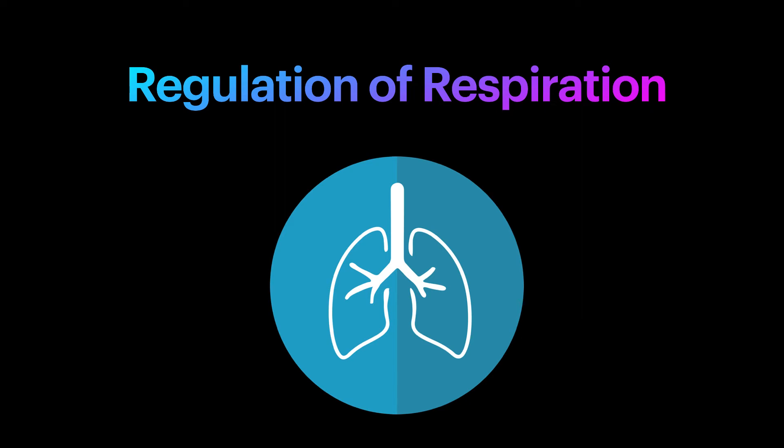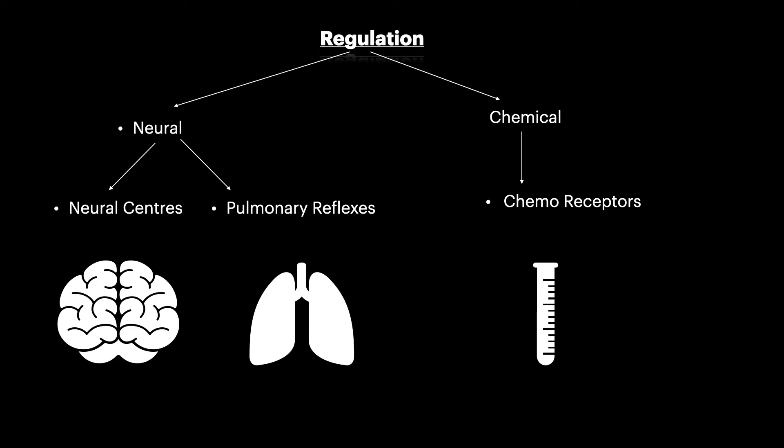Good evening everyone. Today we are going to discuss a very important topic: regulation of respiration. Regulation of respiration can be done at two levels — first, neural regulation, which includes neural centers in the brain as well as pulmonary reflexes in the lung, and second, chemical regulation, which involves peripheral chemoreceptors that we will see in upcoming lectures.